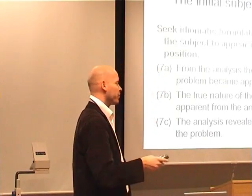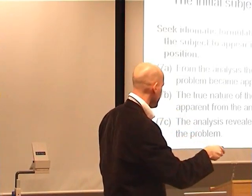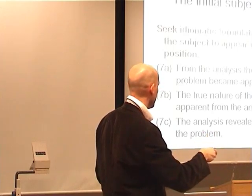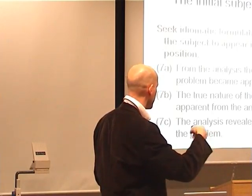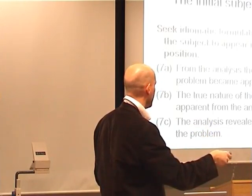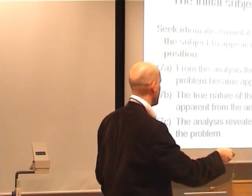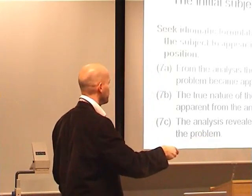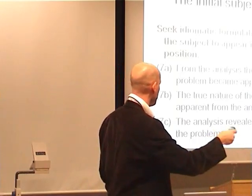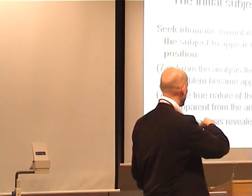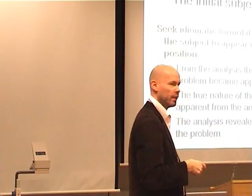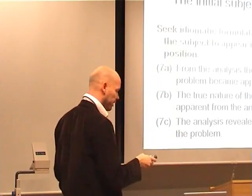In English you have a number of verbs whose major function is to help us place subjects initially. One example is reveal, for instance. So those are the five principles: accessibility, weight and focus, initial subject, and thematic patterning.